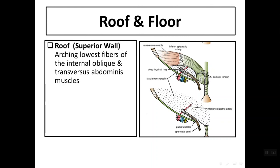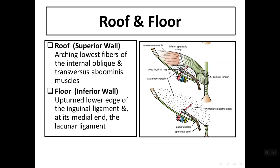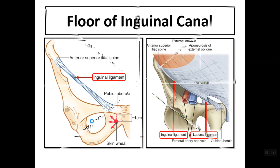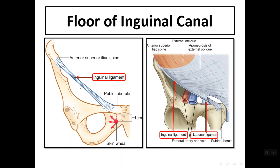The roof of the inguinal canal is formed by the arching lowest fibers of the internal oblique and transversus abdominis muscle, arching over the spermatic cord. The floor, or inferior wall, is formed by the inguinal ligament, in addition to the lacunar ligament near its medial end. The inguinal ligament is formed by the folded lower border of the external oblique aponeurosis, extending between the anterior superior iliac spine and the pubic tubercle. Near the medial end, the lacunar ligament extends medially and backward.